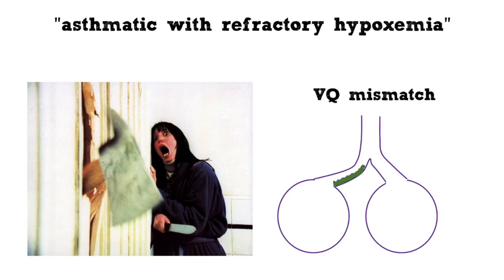Understanding physiology can help you appreciate situations that should not occur. For example, if you're called to evaluate an asthmatic patient with refractory hypoxemia: asthma causes VQ mismatch, and VQ mismatch should respond well to oxygen. So right then, when someone calls and says they have an asthmatic patient with refractory hypoxemia, you can know on the phone that something else is probably going on — maybe a pneumothorax, maybe mucus plugging and severe atelectasis. You should know immediately that something is complicating their asthma and needs to be evaluated right away.